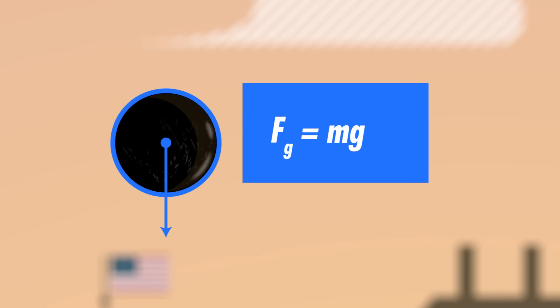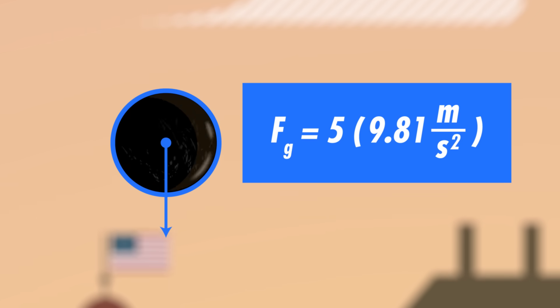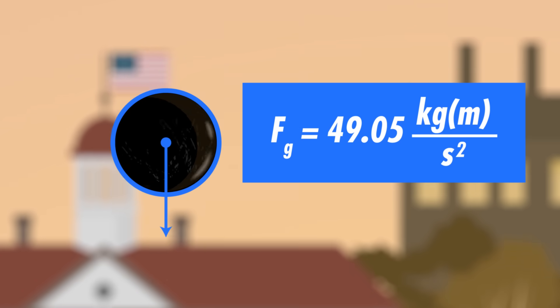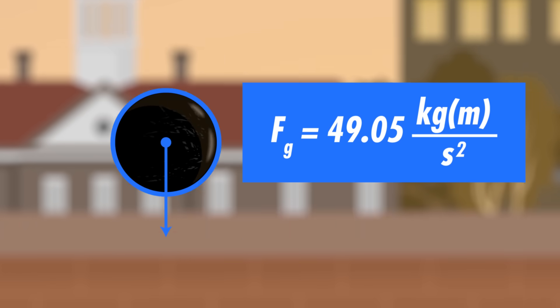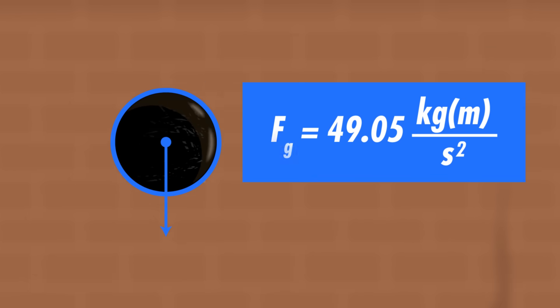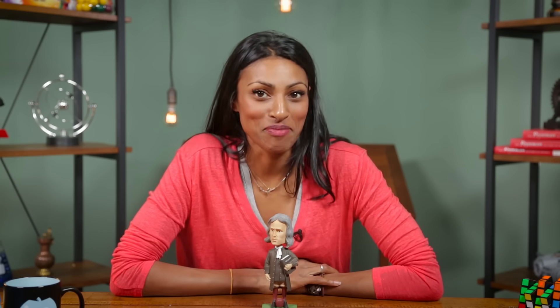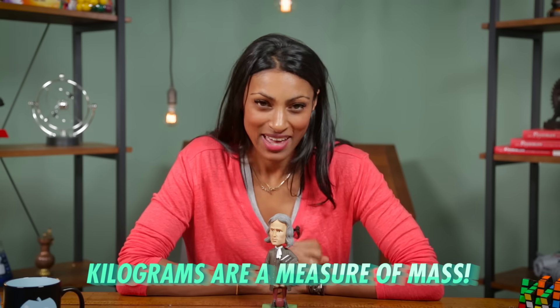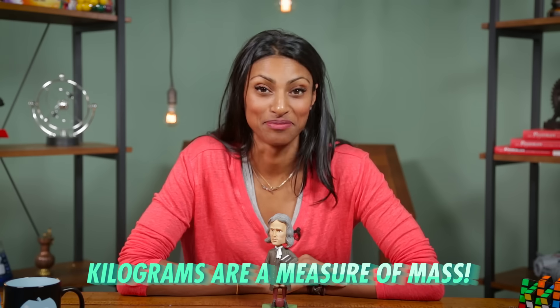So the force of gravity on the ball must be 5kg — the mass of the ball — times small g, which comes to 49.05 kilograms times meters per second squared. We use this equation for gravity so much that it's often just written as fg equals mg. That's how you determine the force of gravity, otherwise known as weight. Those units can be a bit of a mouthful, so we just call them newtons. That's right, we measure weight in newtons, in honor of Sir Isaac, and not in kilograms. Kilograms are a measure of mass.